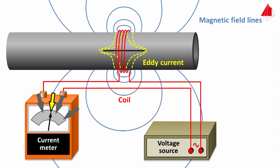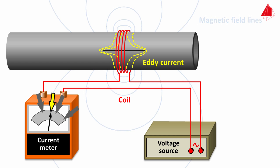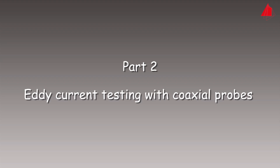In practice, the alternating current frequencies are not as low as shown here for demonstration — they are much higher, typically in the region of some kilohertz. From now on we're going to omit the magnetic field lines in the animation and represent the eddy current in a simplified static way. In eddy current testing with coaxial probes, the coils are either pushed coaxially over the workpiece or pushed through the workpiece.